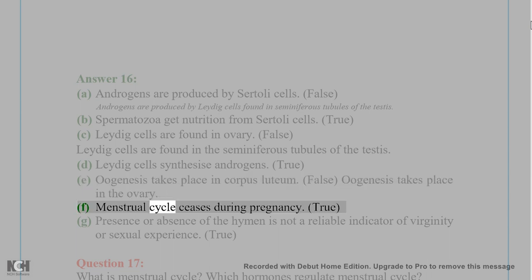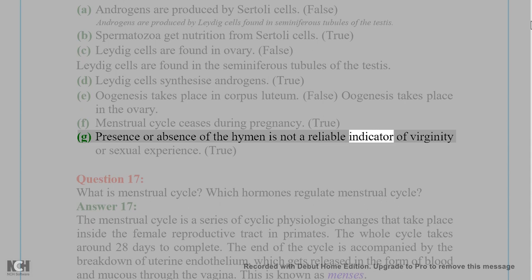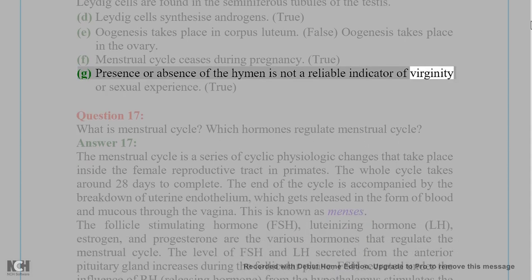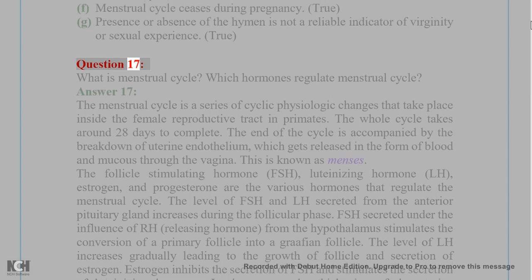E. Oogenesis takes place in corpus luteum — False. Oogenesis takes place in the ovary. F. Menstrual cycle ceases during pregnancy — True. G. Presence or absence of hymen is not a reliable indicator of virginity or sexual experience — True.